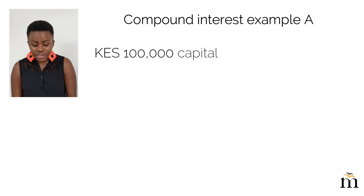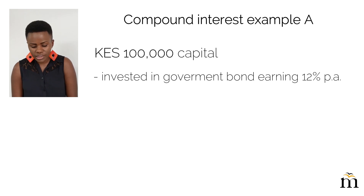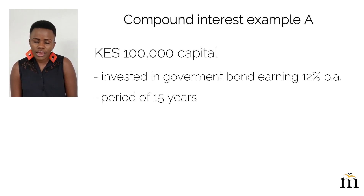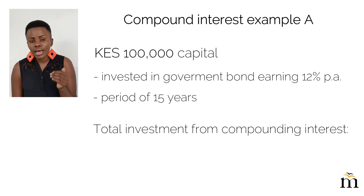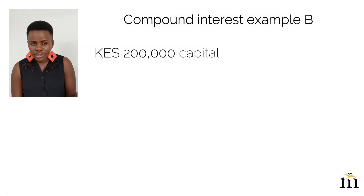Why is this important when it comes to investments? Let's use a couple of examples. Say you have 100,000 shillings today that you'd like to invest in a government bond earning 12% net of taxes per year, and you're thinking long term — say 15 years. If you compound that amount, at the end of 15 years you will have 0.6 million shillings. Remember, you invested 100,000, so 500,000 is literally free money — money you haven't worked for, just your interest earning you that.